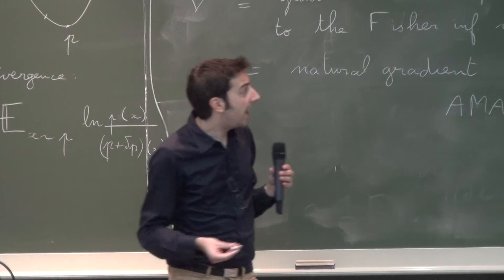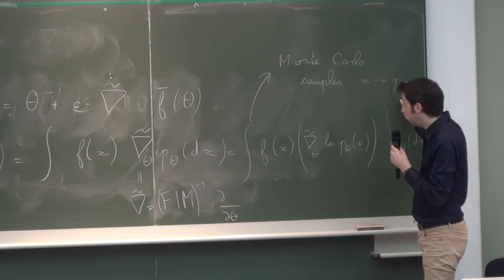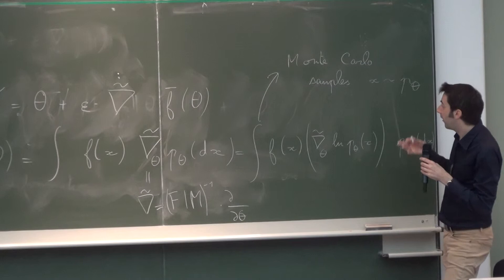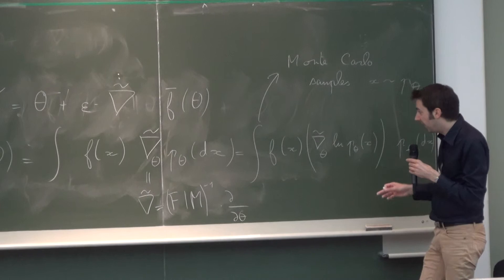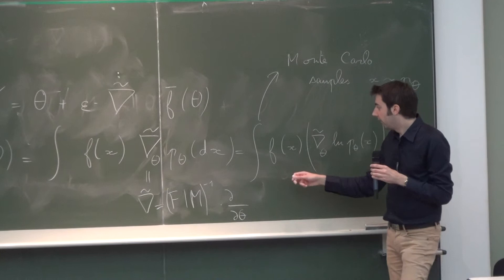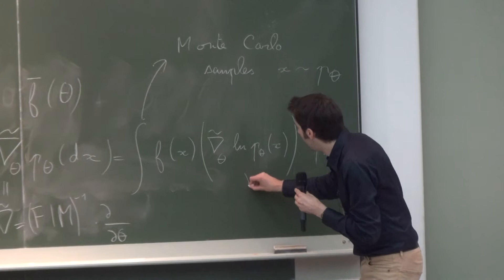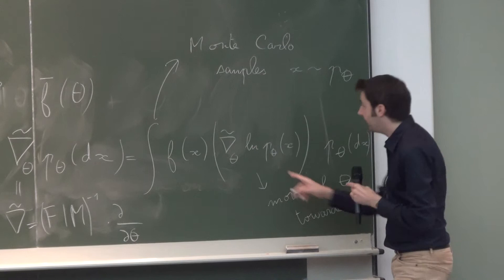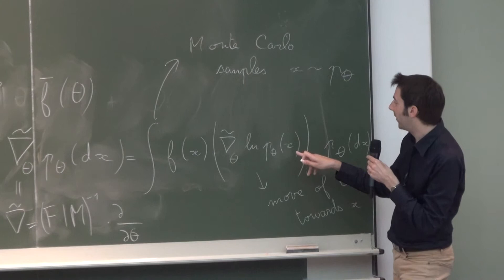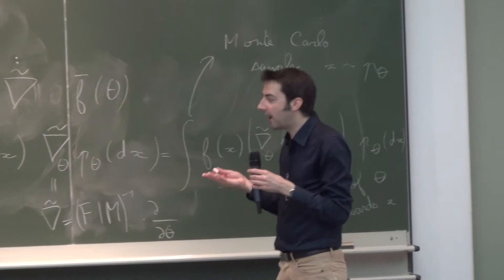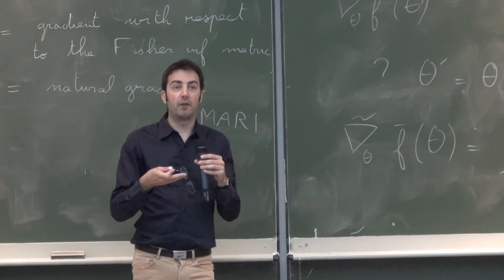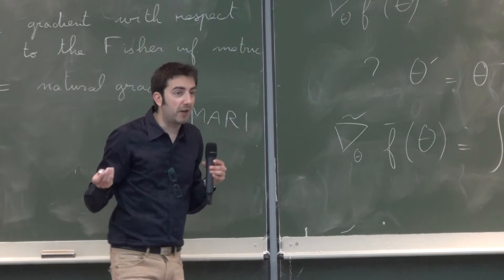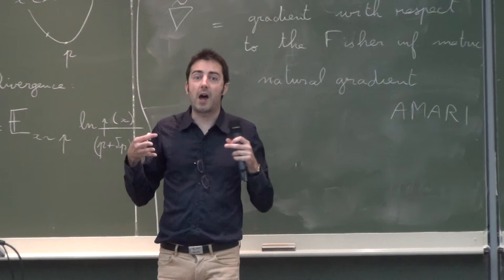You compute how the probability of these samples would change if you change theta a bit, weighted by the value of f of course — in this integral you give higher weight to good values of x. This is a move of theta towards good x values. This gradient tells you how to adjust theta to increase the probability of a particular sample x, weighted by whether x has a good or bad value. You update your belief about where the good points lie, and so you have a trajectory in theta space. Hopefully the distribution p_theta concentrates around the optimal value of x.